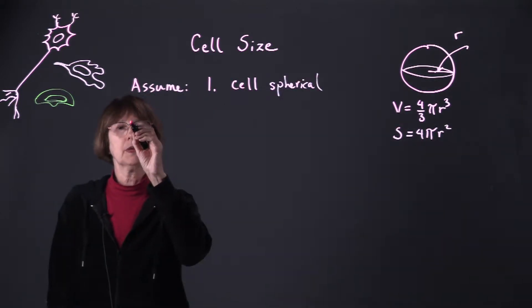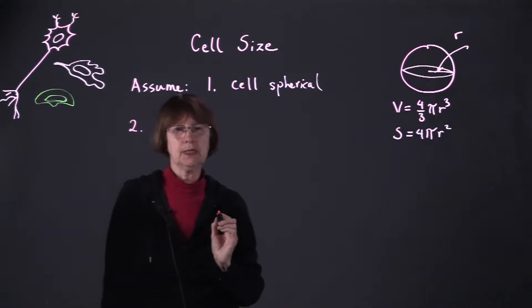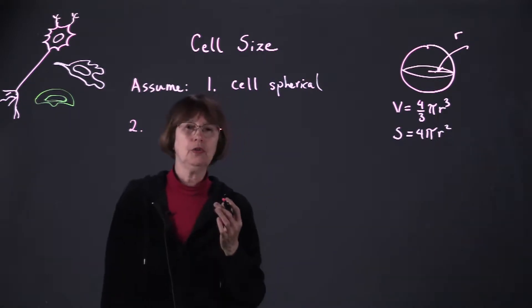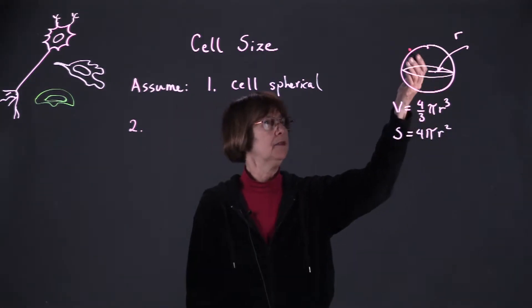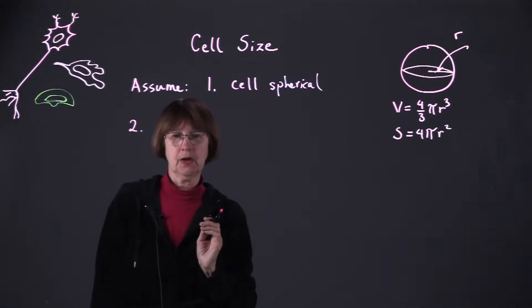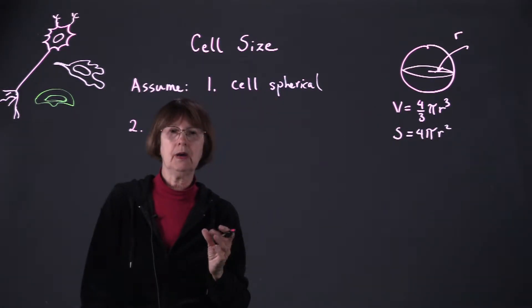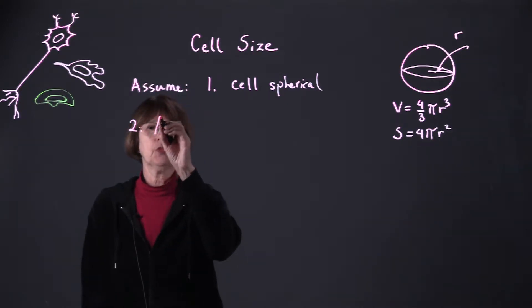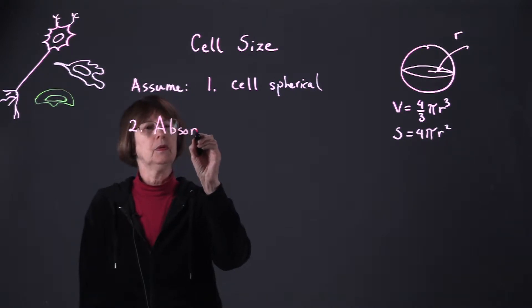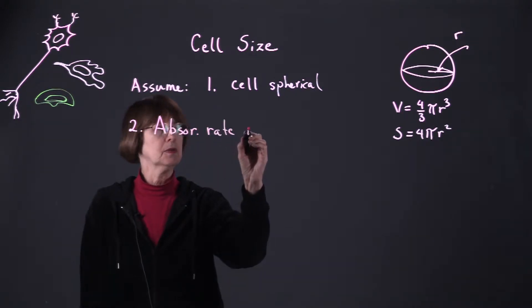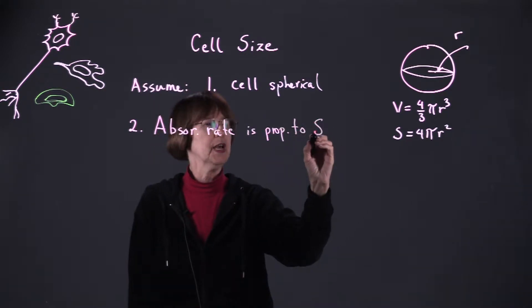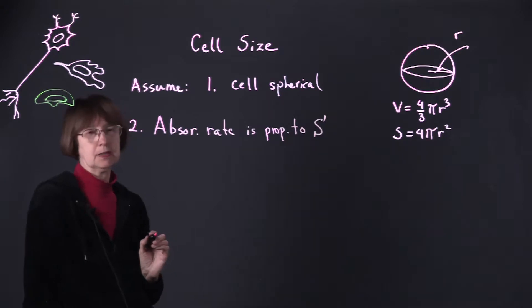Now we're going to make a couple of other assumptions about how nutrients enter and are used up in a cell. First of all, nutrients coming into a cell have to come in through the surface area. The bigger that surface area, the faster the cell can accumulate nutrients. So we're going to assume that the absorption of nutrients, namely the absorption rate, is proportional to the surface area of the cell that we refer to as S.